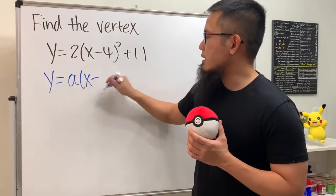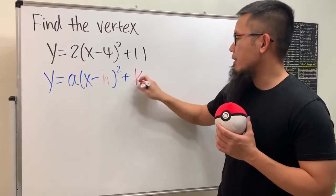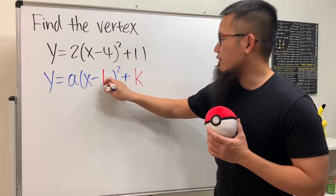So let me remind you guys the vertex form is y equals a times parentheses x minus h close parentheses squared plus k.